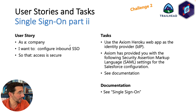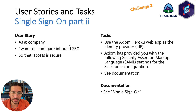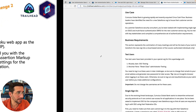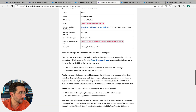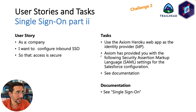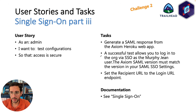For part two of Single Sign-On, Challenge Two: as a company, I want to configure inbound SSO so that access is secure. Here's what you're going to do: you're going to use the Axiom Heroku app. Axiom provided you with the following Security Markup Language (SAML) settings, and those are the settings you're going to use. Once you do that, you're able to move on to the next part.